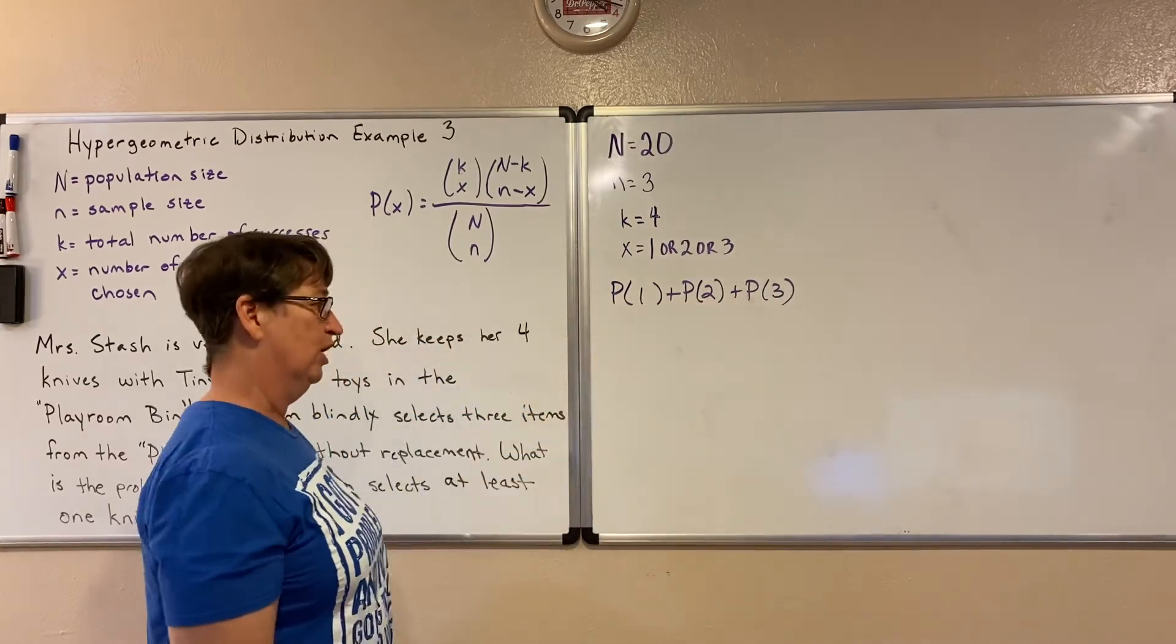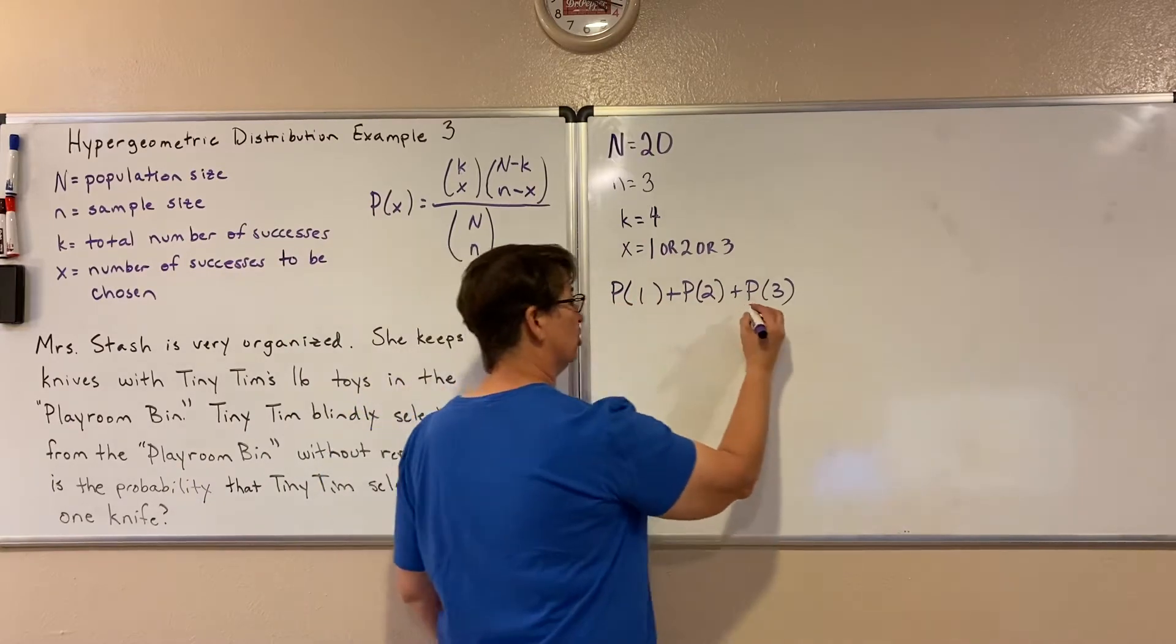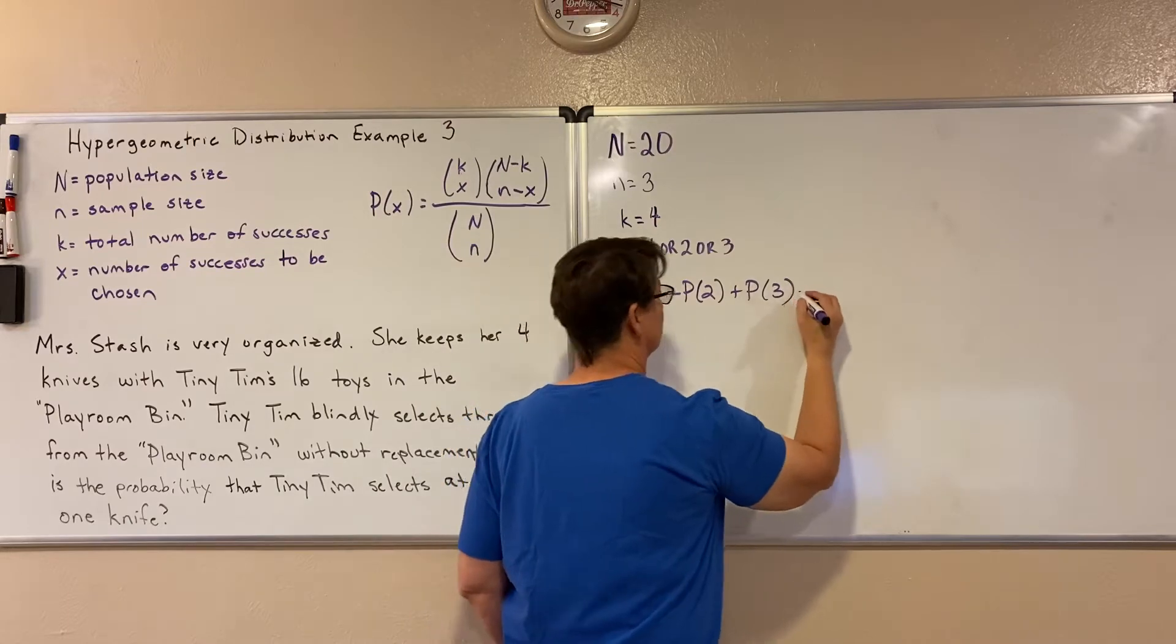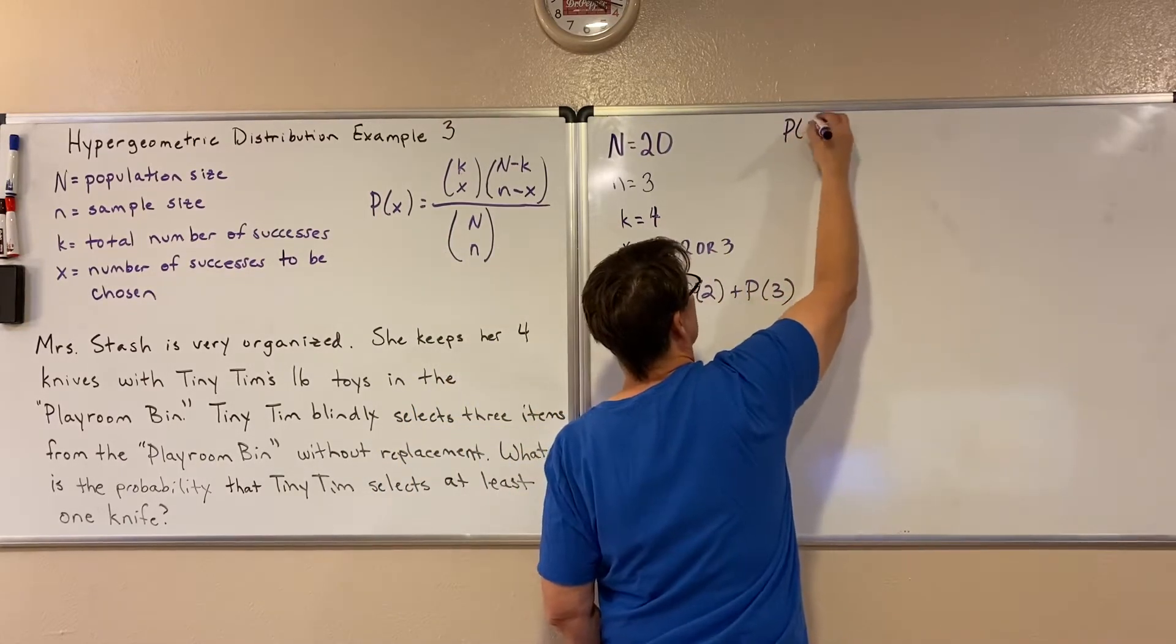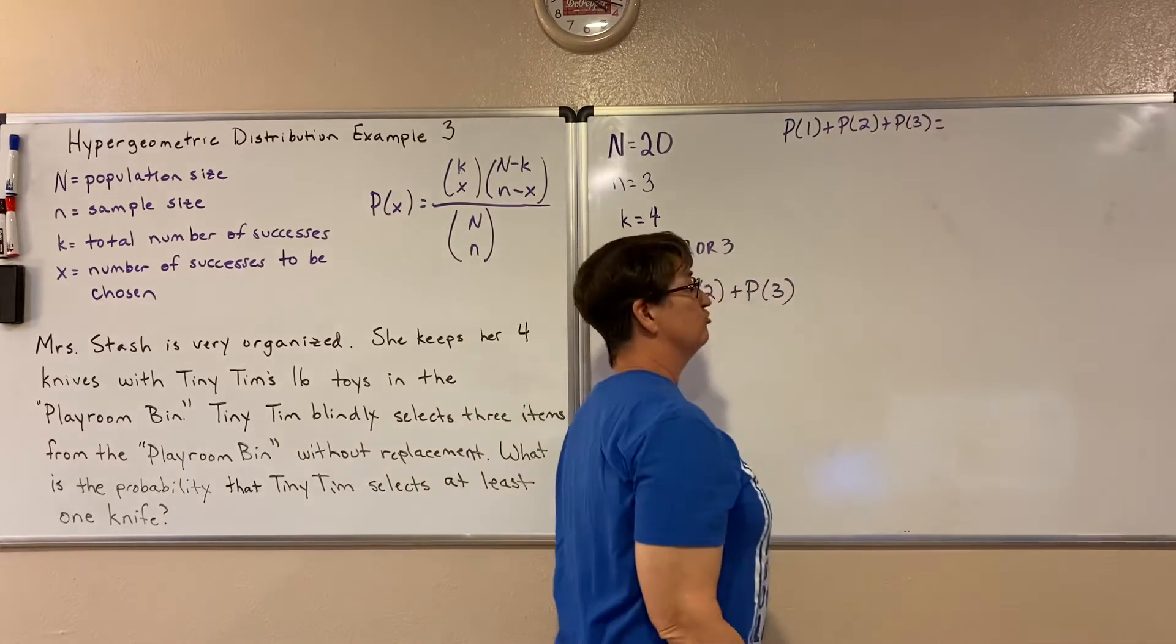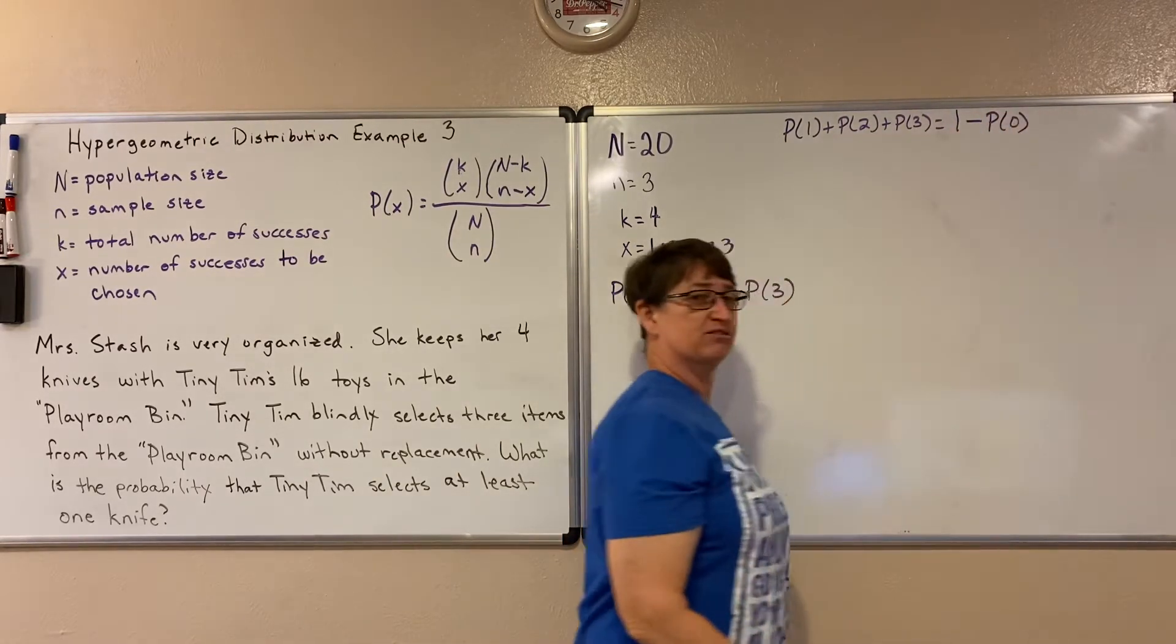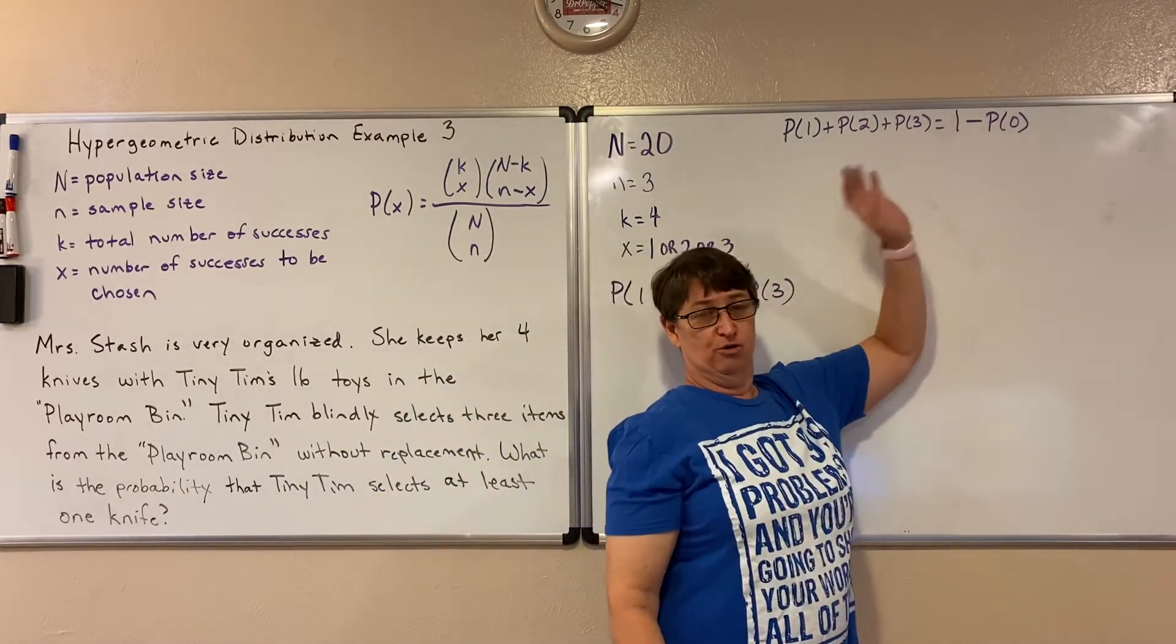You've got at least one. So zero is the complement. So we could just say that the probability of this is equal to one minus the probability of one plus the probability of two plus the probability of three is equal to one minus the probability of zero, because zero is the complement of one, two, or three.